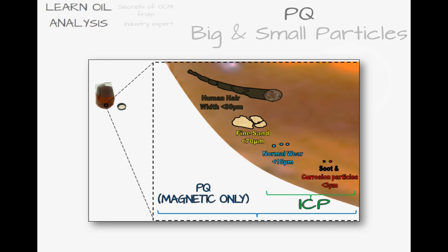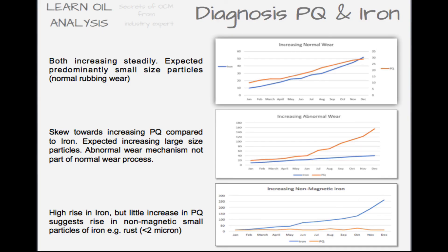This is important diagnostically because you can determine if the wear being generated is normal wear, usually less than 15 microns, or large abnormal wear particles. If ICP iron and PQ are rising together in a trend of historical samples without an oil change, this suggests the increase is in small particles. But if the PQ increases faster than the iron, this means that the abnormal wear process is occurring. If in contrast the iron is rising but the PQ is not, this suggests there is an increase in small non-magnetic particles such as rust. Consequently, the combination of PQ and iron is a good prognostic tool in condition monitoring.